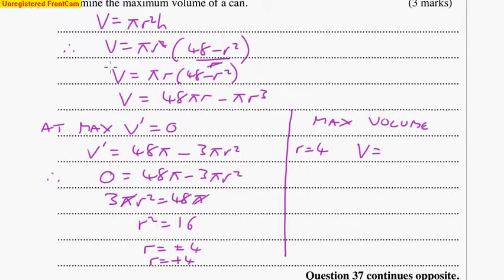And the volume equation I'm going to use is... Let's just highlight a different color. I'll use this one here. And in there, I'll put my 4 in. So I get 48π times 4 minus π times 4³.